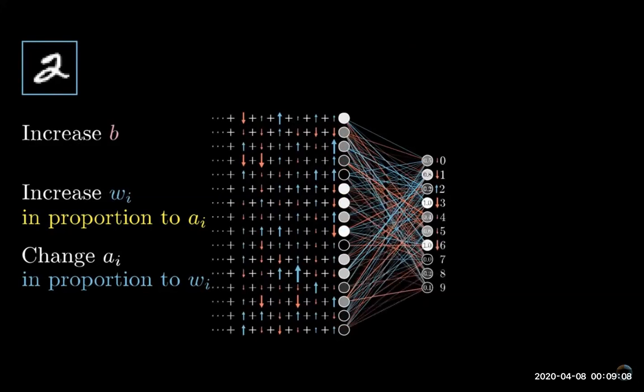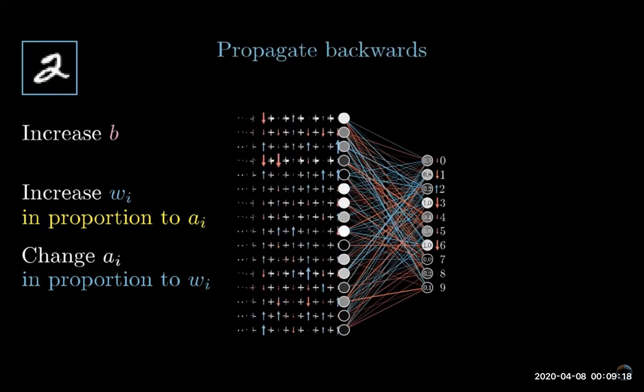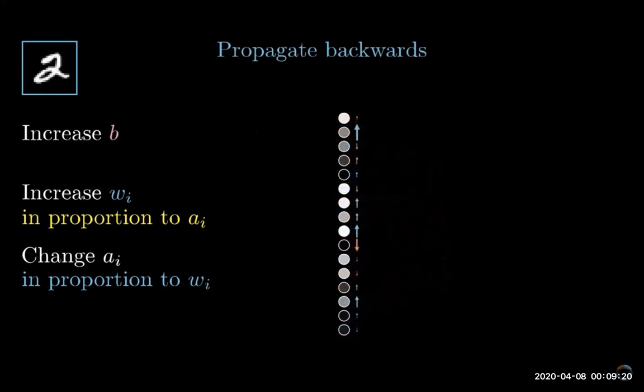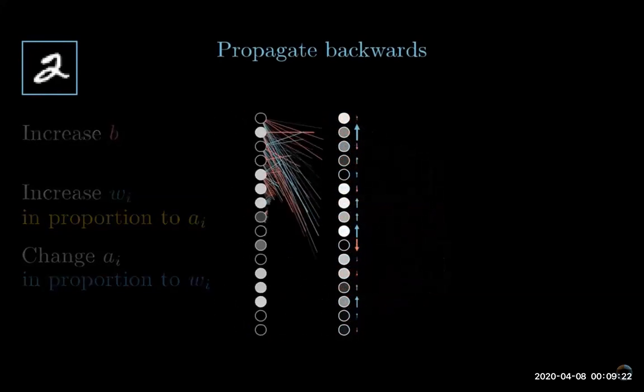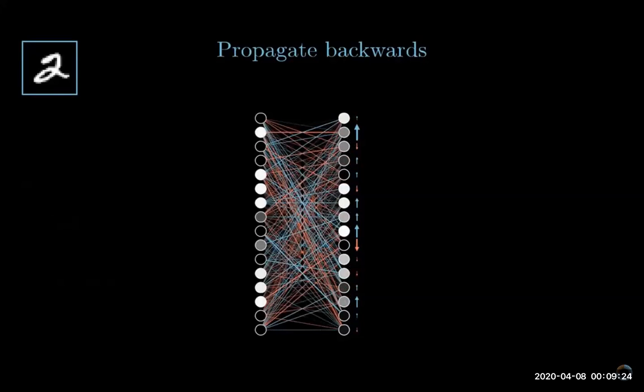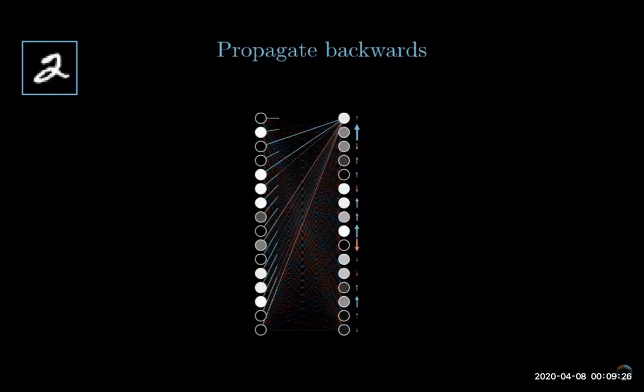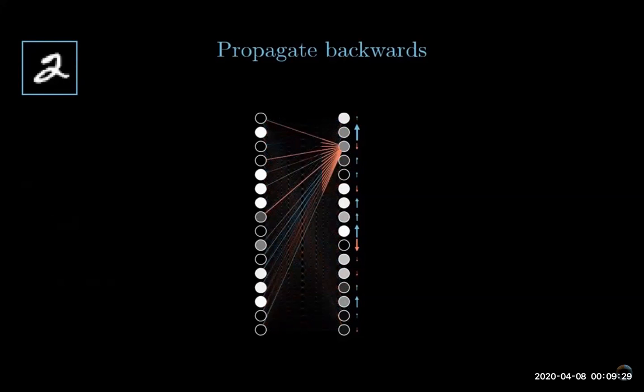So the desire of this digit two neuron is added together with the desires of all the other output neurons for what should happen to this second to last layer. This is where the idea of propagating backwards comes in. By adding together all these desired effects, you basically get a list of nudges that you want to happen to the second to last layer, and once you have those you can recursively apply the same process to the relevant weights and biases.